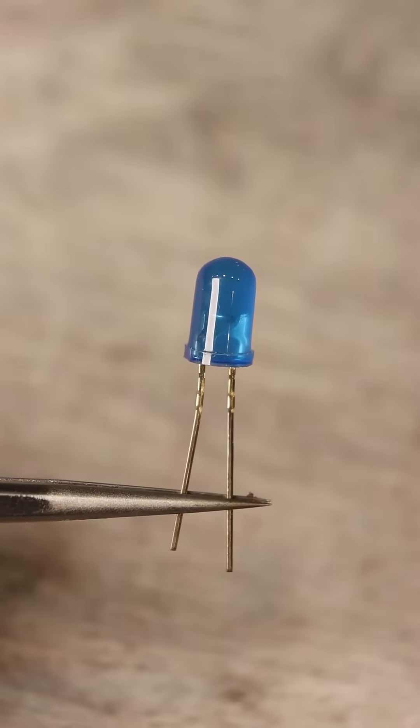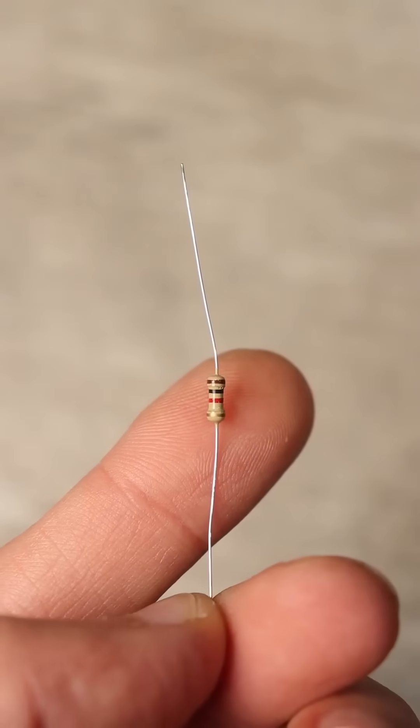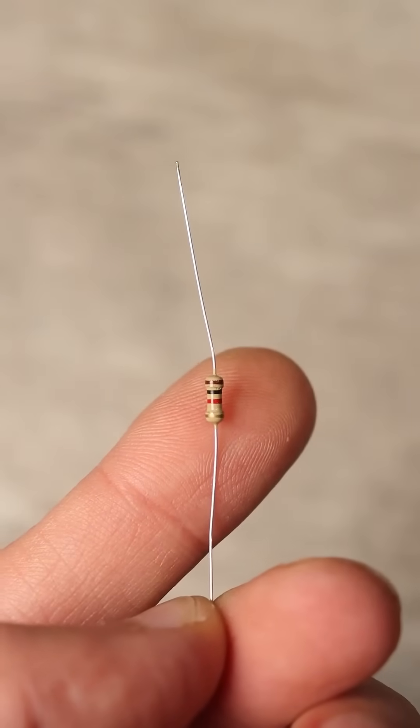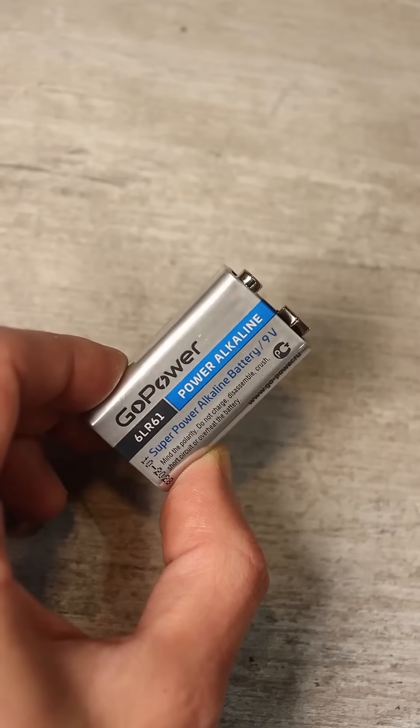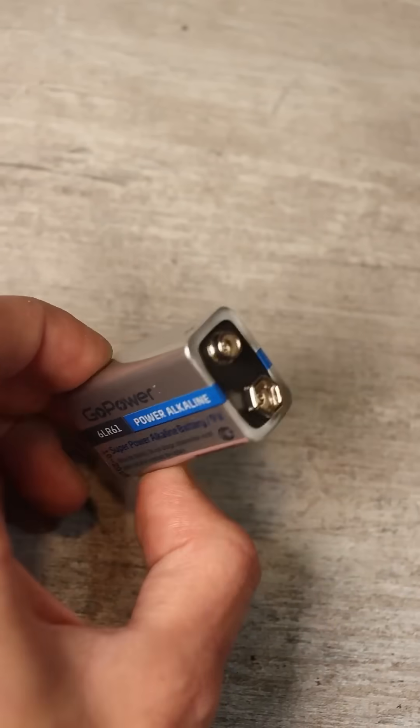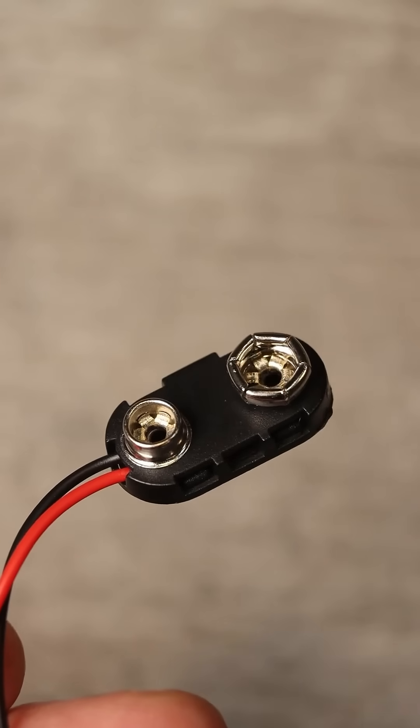One LED 3 or 5 mm, color of your choice, a resistor of any power with a resistance of 1-2 kΩ and a 6F22 format 9V battery, also known as a crown, and a socket for it.